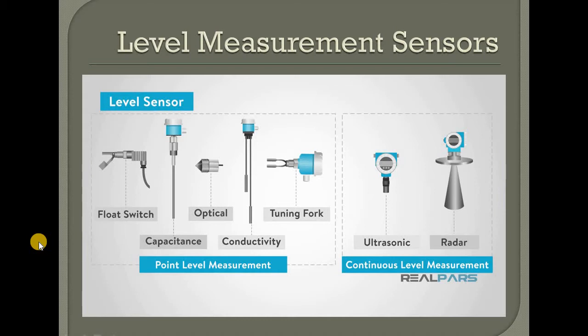Continuous level measurement is to be continuous. The level of the content is to check the high level or low level. We have to check the high level or low level measurement. At point level measurement, capacitance level measurement we discussed.